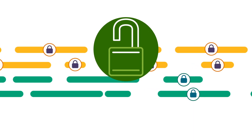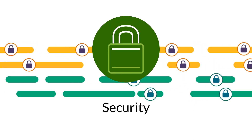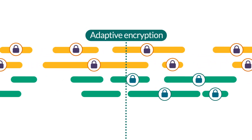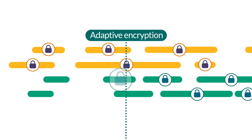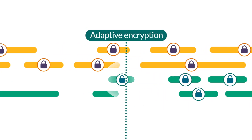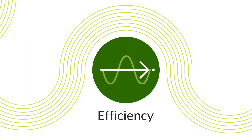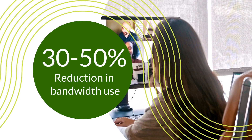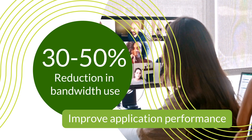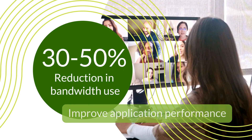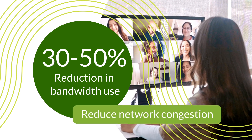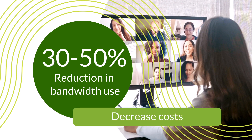It can also recognize when packets are already encrypted and will not re-encrypt them, further omitting unnecessary overhead. Because there's no data overhead, tunnel-free SD-WAN creates a 30% to 50% reduction in bandwidth use, improving application performance, reducing network congestion, and decreasing costs.